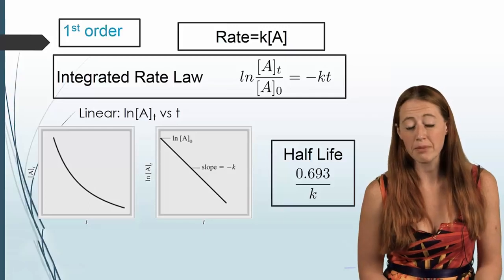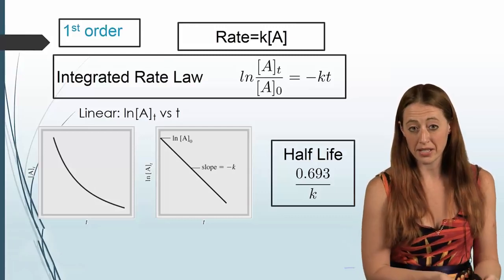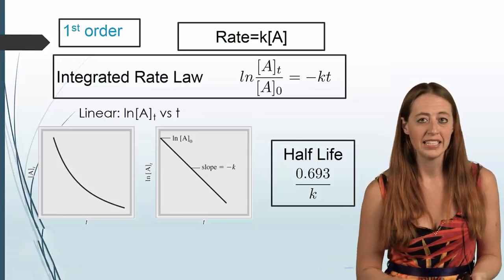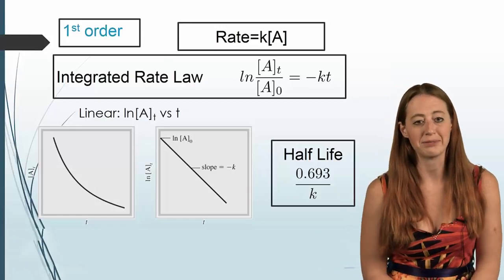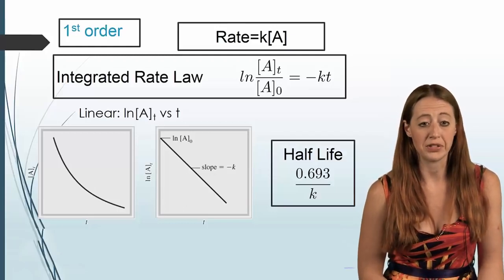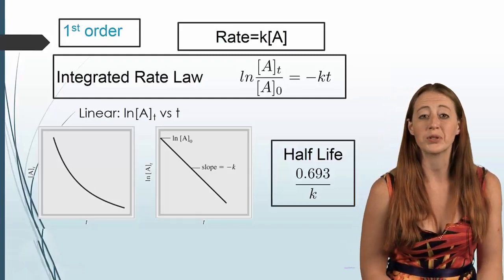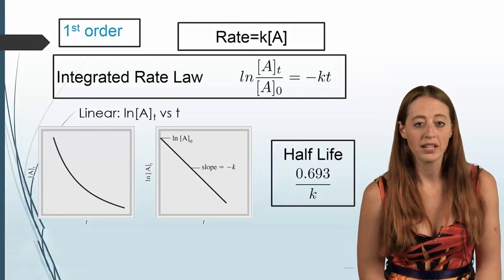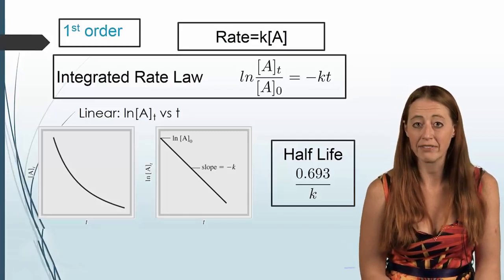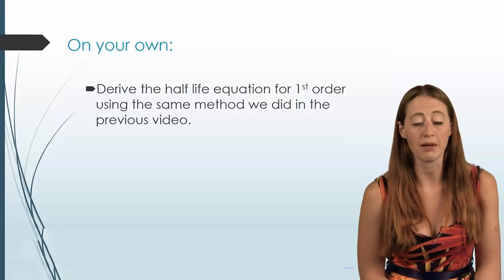If you're doing this in the lab and you don't know what kind of reaction you're dealing with, you could graph T versus concentration and see if it's linear. If that doesn't work, you could graph T versus the natural log of A and see if that's linear. The half-life formula for first order is T½ = 0.693 over k. You should derive that on your own using the fact that [A]t equals ½[A]0 filled into the integrated rate law.